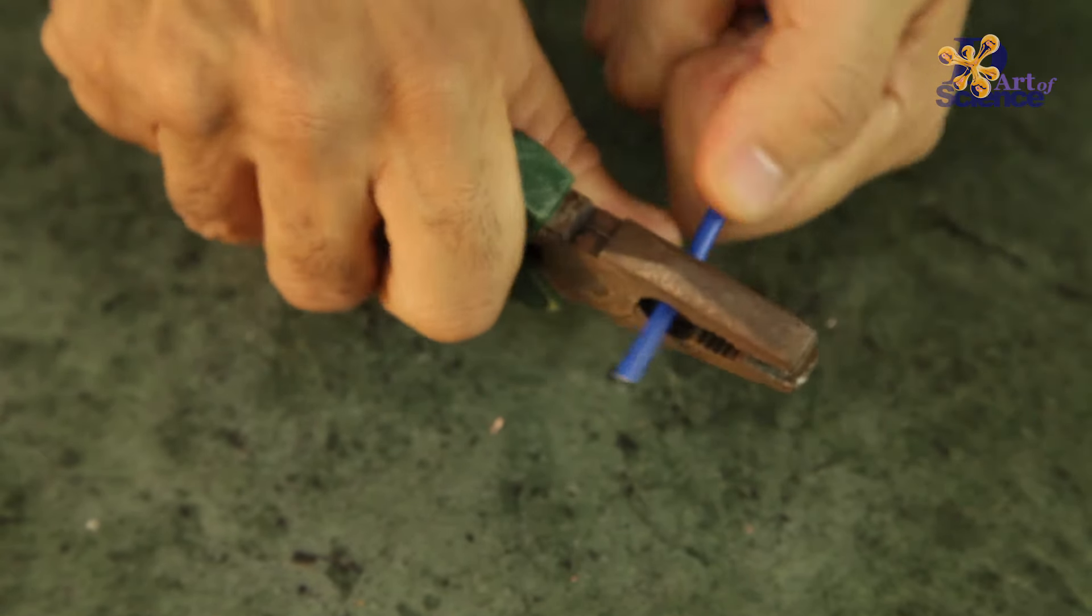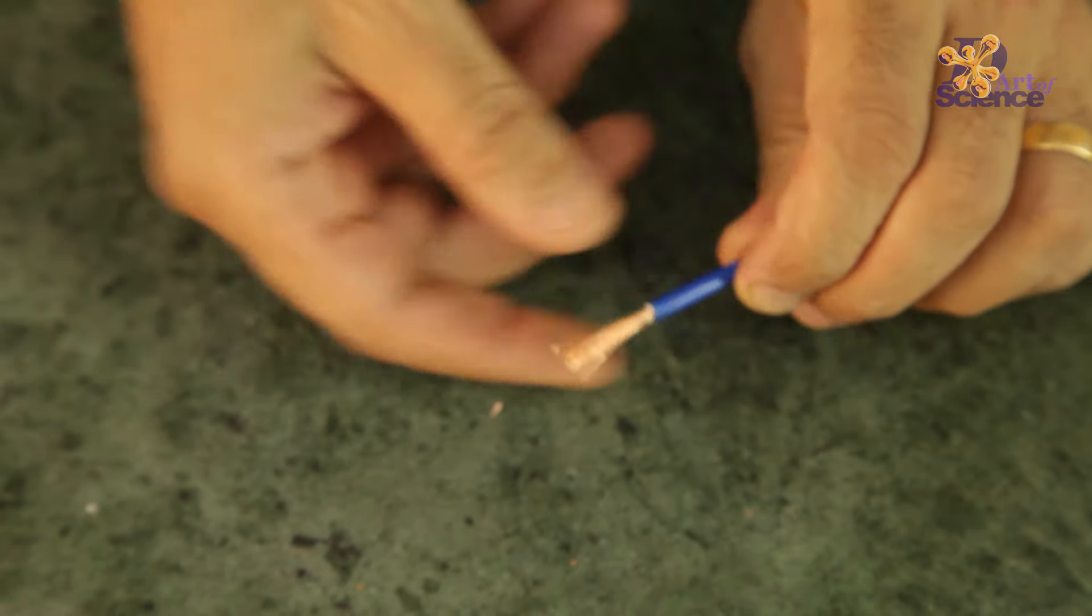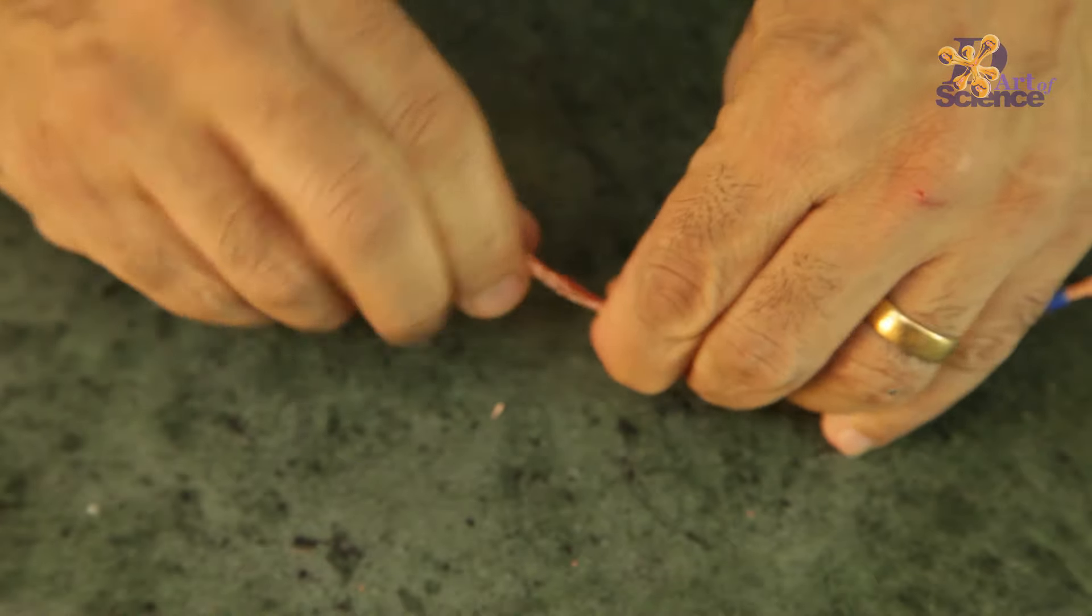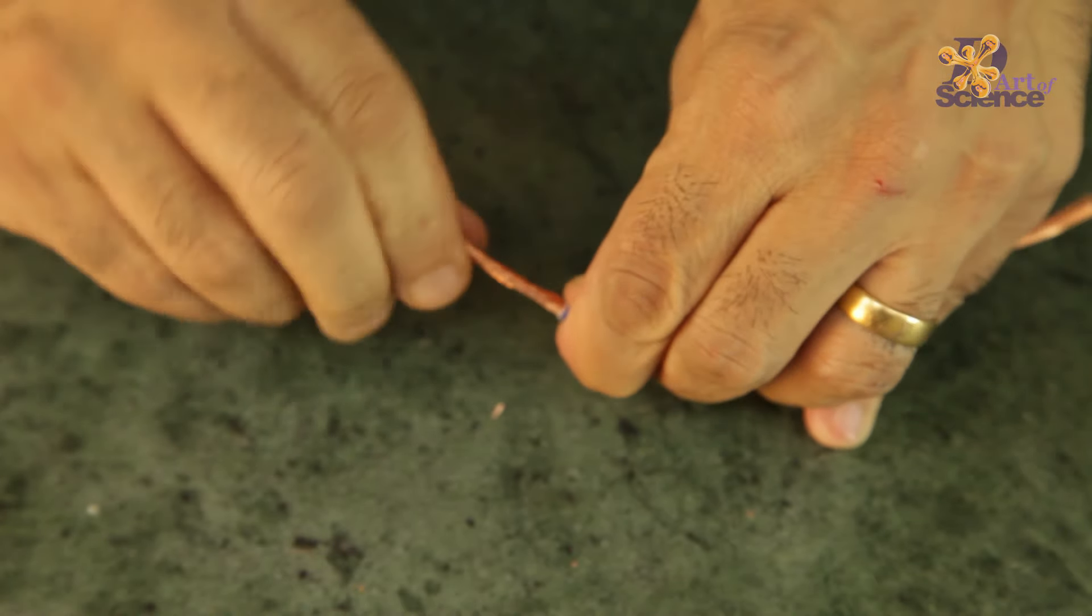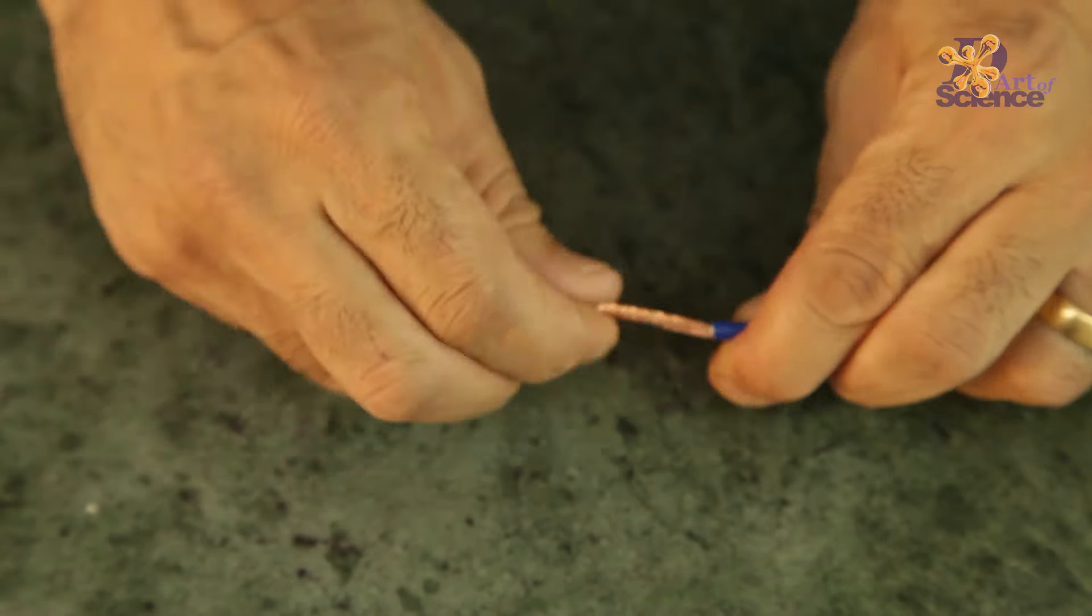If you have a wire stripper then it's best, otherwise you could even use a plier to do that. Twist one end of the wire so that it looks like one thick wire. Be careful while doing that because the thin wire strands can poke into your fingers. So if you could use the pliers to hold while you twist the wire, it would be much safer.